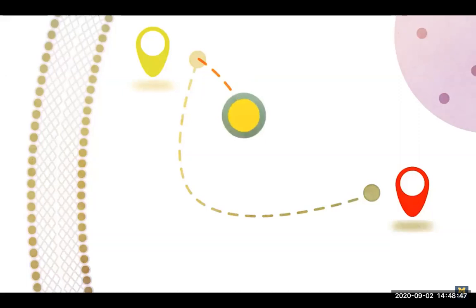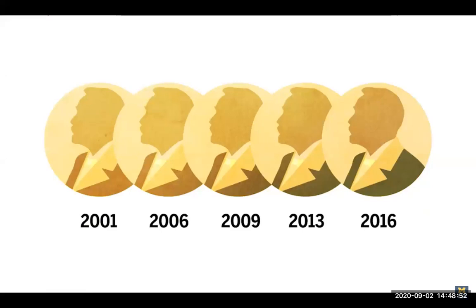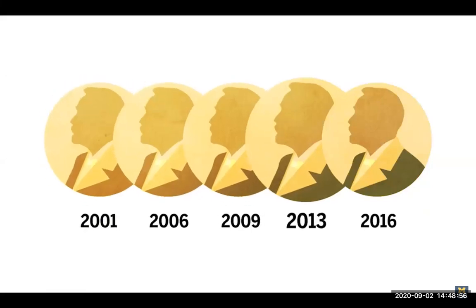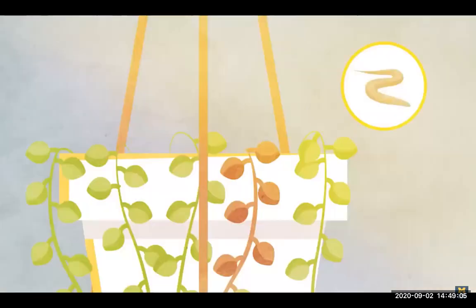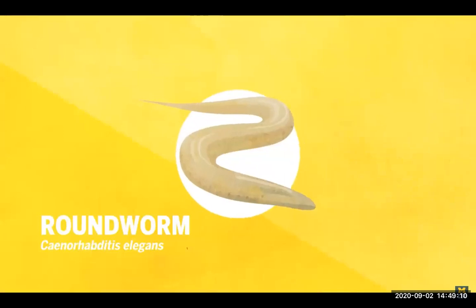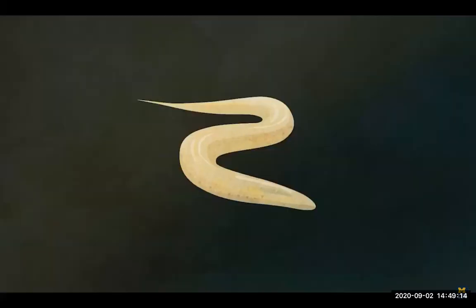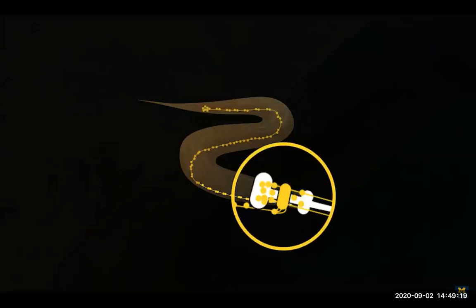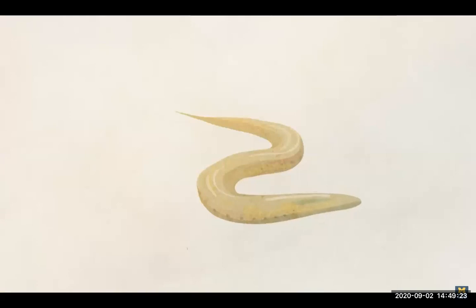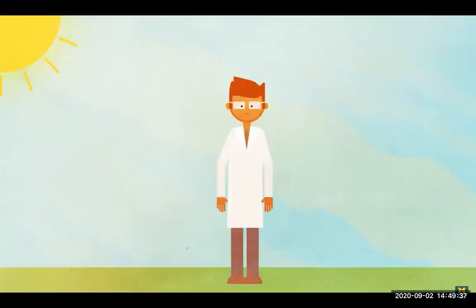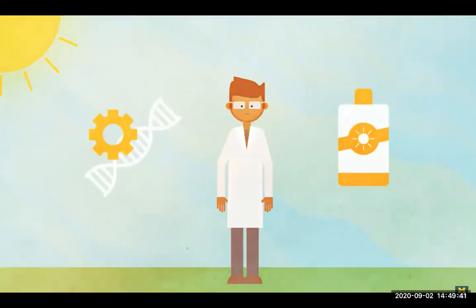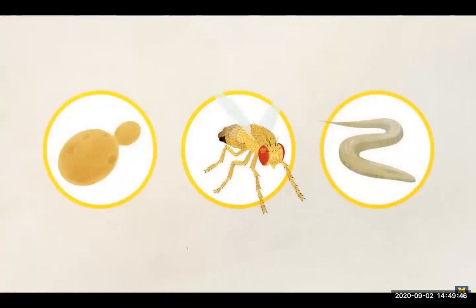In Lois Weissman's lab, researchers use yeast to work out how organelles within each cell get moved to the right location at precisely the right time — work that has the potential to shed new light on neurological disorders. Yeast research has earned Nobel Prizes in 2001, 2006, 2009, 2013, and 2016. Even millimeter-long transparent worms called C. elegans can help us understand how our bodies function and respond to disease. Despite its small nervous system, C. elegans can perform many behaviors corresponding to complex human behaviors, including responding to light even without eyes.